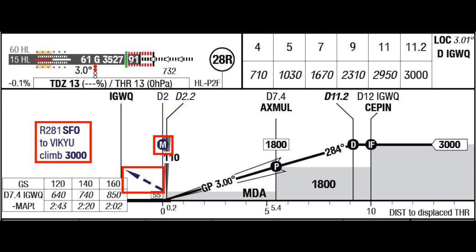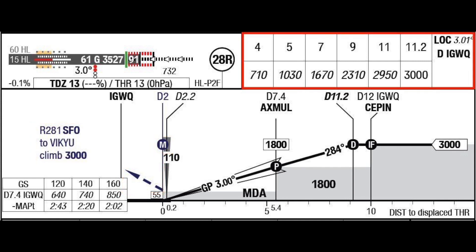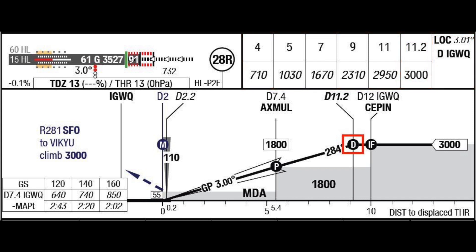Non-precision approach procedure details featuring a continuous final approach profile descent are depicted within the distance altitude descent table, starting at the final approach point (P), the final approach fix (F), or a LIDO calculated descent point (D), as featured by the FMS database coded profile, down to the minimum descent altitude. Please note that the descent point is generated by the flight management computer. This position is not hard coded and therefore not visible as a waypoint or fix in the FMS database.